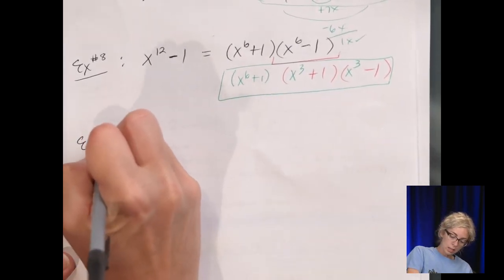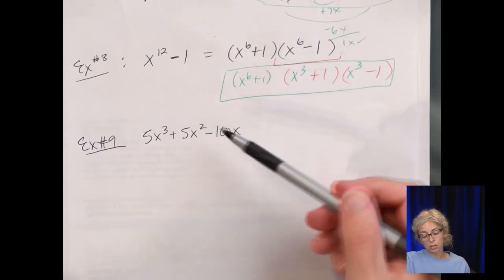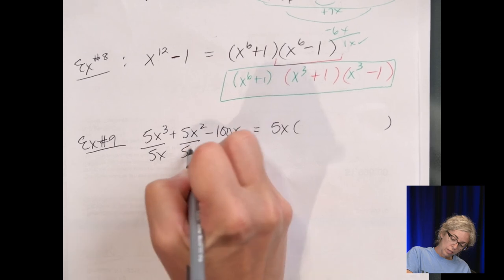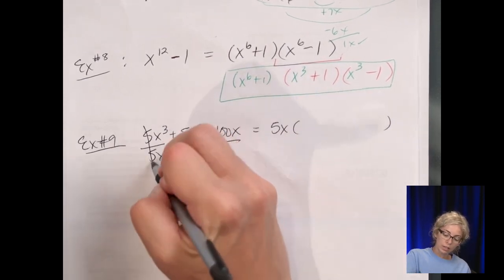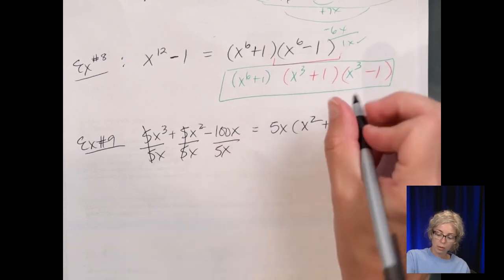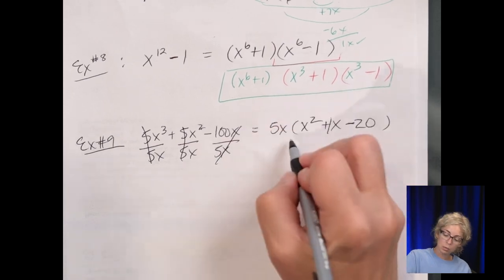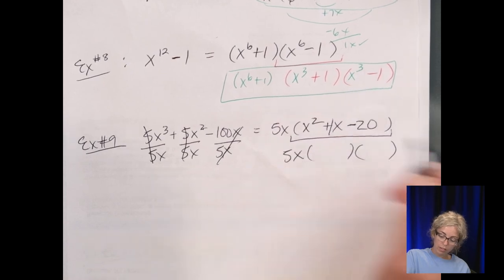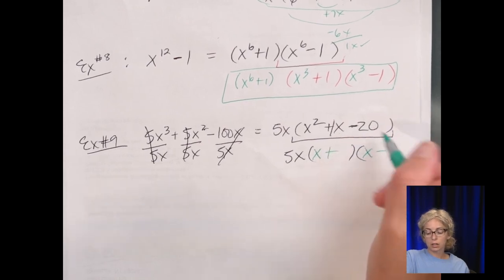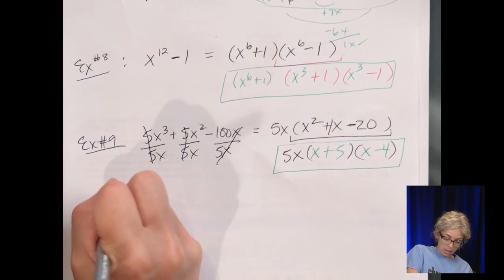Number 9. We've got 5x to the third plus 5x squared minus 100x. Now, 5 goes into 100, and they all have an x. So this time our GCF is a 5x. So divide everything by 5x. The 5's cancel, take 1x away from 3, we have x squared. The 5's cancel, take 1 away from 2, we have 1. 100 divided by 5 is 20, and the x's cancel. Now, there are factors of 20 that combine to 1. That's 5 and 4. So this needs to be factored again. Set up your two parentheses, bring down the 5x. So again, because the middle's in the x, it's going to be x times x. We said 5 and 4, and the signs have to be different. 5's bigger, so that goes with the sign that's in the middle.